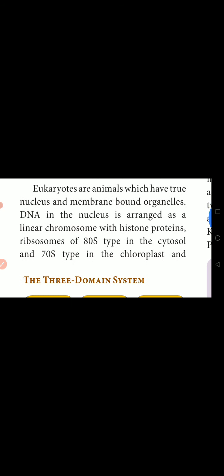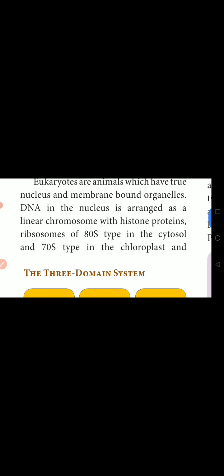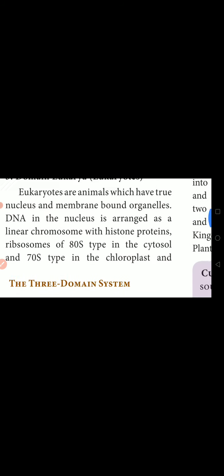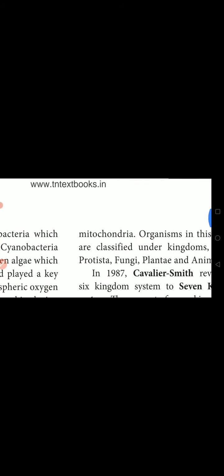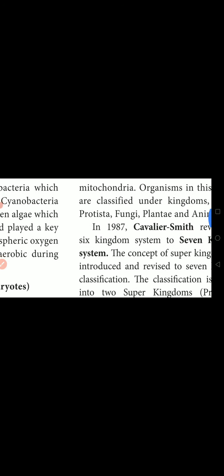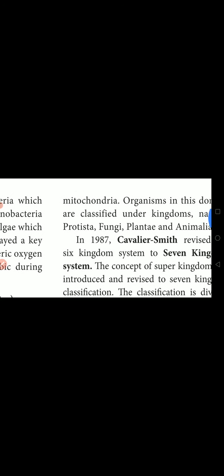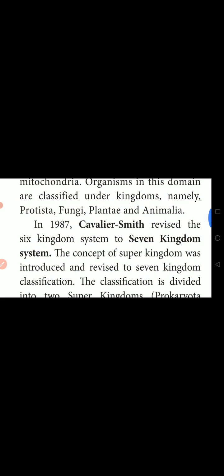Ribosomes are of 80S type in the cytosol and 70S type in the chloroplast and mitochondria. Chloroplast and mitochondria will be present in eukaryotes. The organisms in this domain are classified under other kingdoms, namely Protista, Fungi, Plantae, and Animalia.